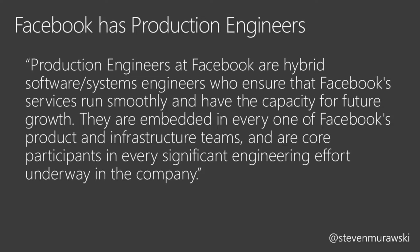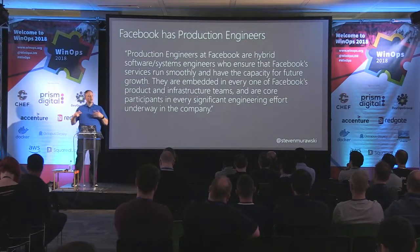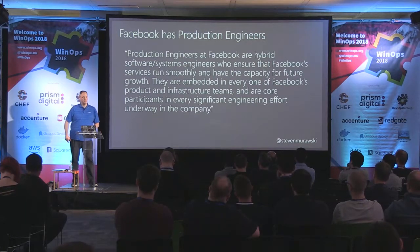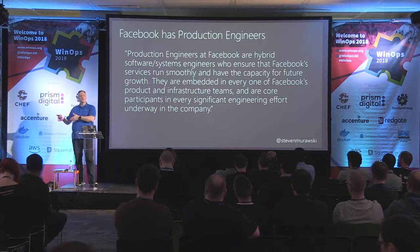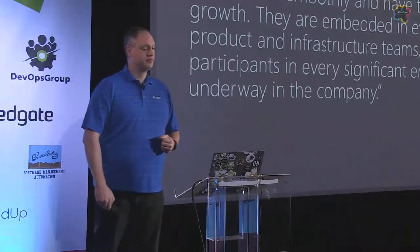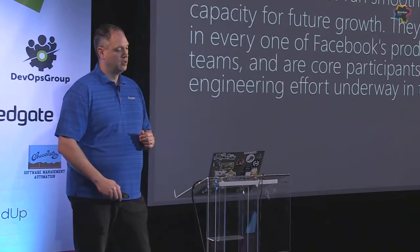This is a little different from Google's model. Google's site reliability engineering teams are separate teams, whereas Facebook embeds these production engineers into product teams. They make sure that in every significant effort, there is representation from production engineering. The leads at Facebook, for ops and engineering, report up to the same person — they are not separate hierarchies. This is crucial when it comes time to make decisions; you don't have to escalate to the C-suite to come to a resolution.